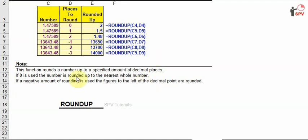Round up is exactly opposite to round down — it rounds the value upward. For example, if it is 1.475, the digit 7 is more than 5, so it rounds up to 1.5. If rounding up to 1 decimal place, since the next digit pushes the value higher, it gives 2.